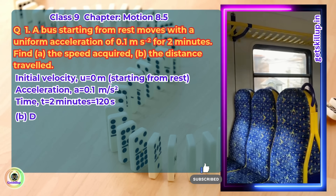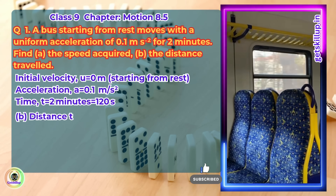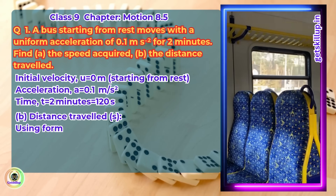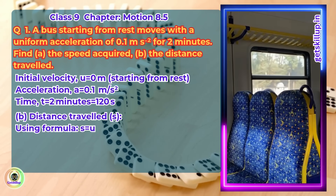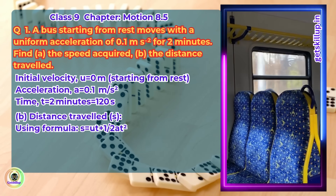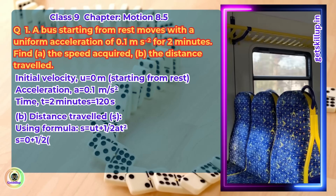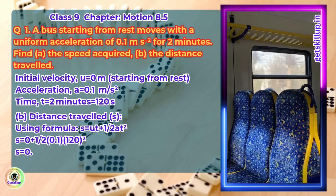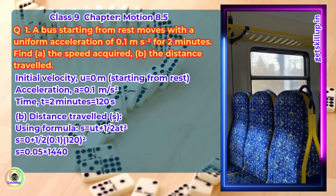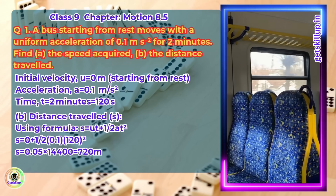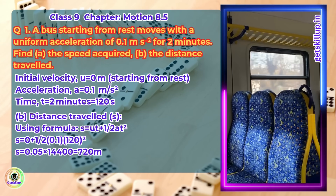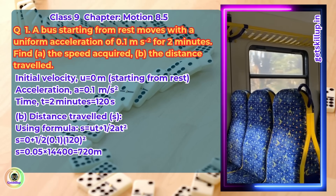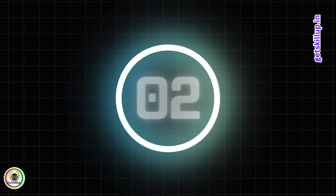Distance travelled s: using formula s equals ut plus half at squared, s equals 0 plus 1/2 into 0.1 into 120 squared, which is equal to 0.05 into 14400, which is equal to 720 meter.